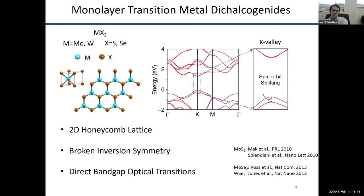Just to give a bit more information: this is a top-down view of the crystal showing its honeycomb structure. If we look at the side view, we see the transition metal in the middle sandwiched between two layers of chalcogen atoms. The crystal has broken inversion symmetry, which is important for certain nonlinear optical effects. Looking at the optical transitions: since the material shows strong photoluminescence, that means it has a direct or nearly direct band gap. We look at the single-particle band structure — crystal momentum versus energy — and in a crystalline system we have bands and gaps.